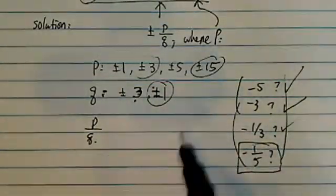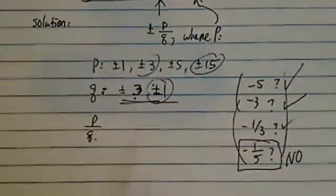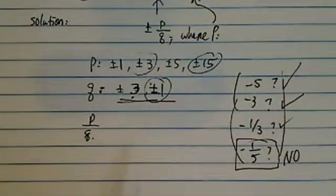Minus 1 over 5, however, is not possible because there's no 5 on the denominator according to the rational root theorem.